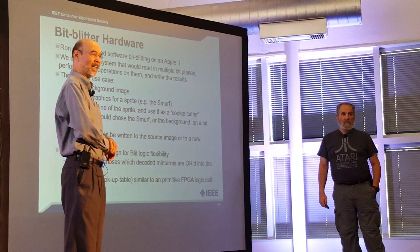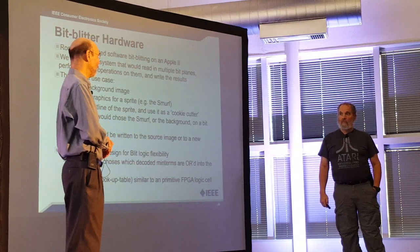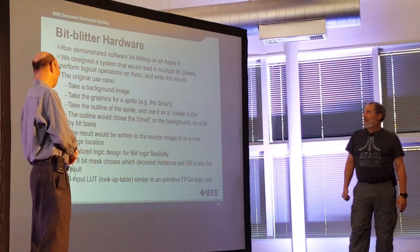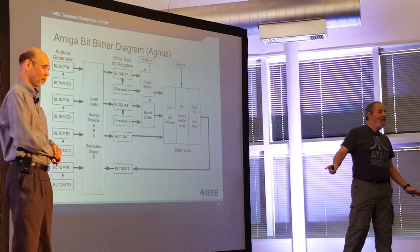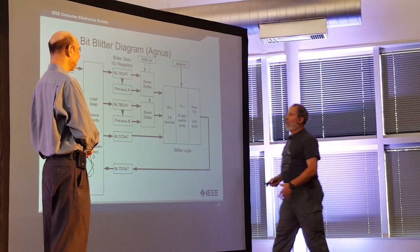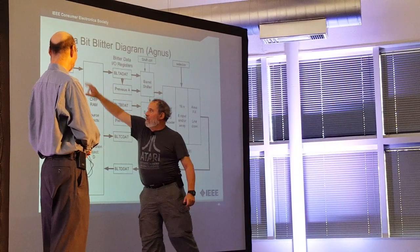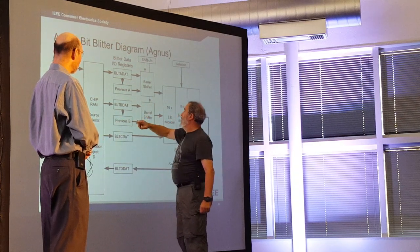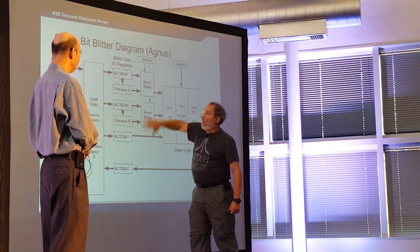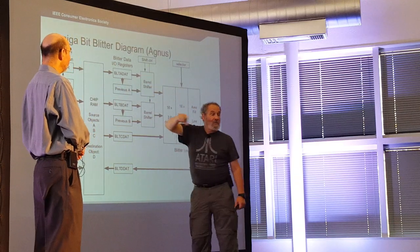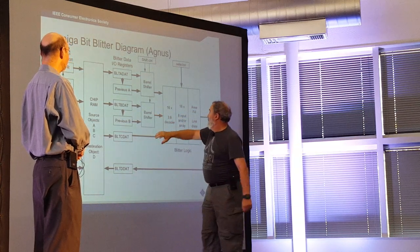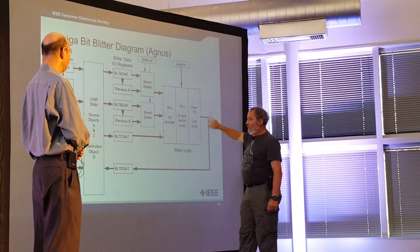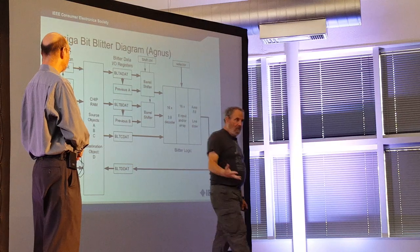My only regret is I didn't put carry logic in it — we would have had more perspective. You can take an object, the outline of the object, and a background, run them into the ALU and barrel shifter. The shift control handles any possible combination. The output can go into decoders, and there are pieces that do area fill and line draw, with results going back out to a fourth memory location.